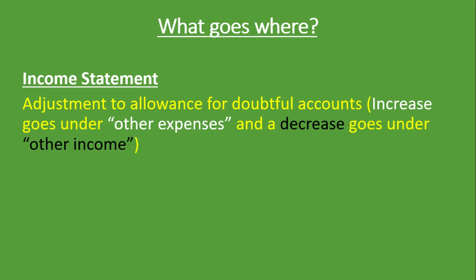So if you had an Allowance in the previous period and now we have a New Allowance — if the New Allowance is greater than the previous Allowance, then we put it under Other Expenses. If the Old Allowance is greater than the New Allowance, then we put it under Other Income.